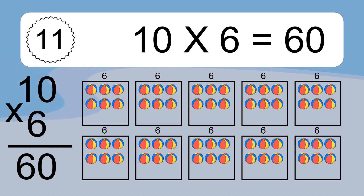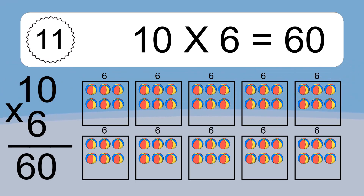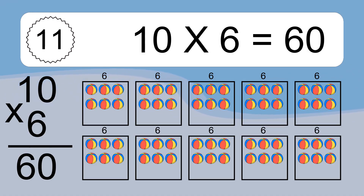10 times 6 equals 60. We have 10 boxes, and each box has 6 colorful balls inside. If you count all the balls in all the boxes together, you will have 10 times 6 balls. This equals 60 balls.